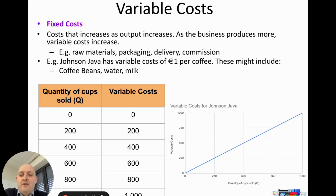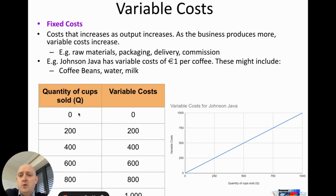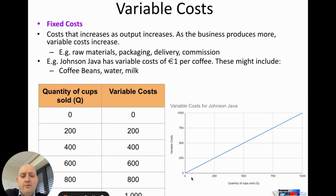We can plot this on a diagram: as quantity goes up, total variable cost goes up. To get total variable cost, we multiply quantity by the variable cost per coffee (€1). So 200 cups gives €200, 400 gives €400, and so on — producing a straight line, essentially a y = x line, where at 500 units the variable cost is €500.